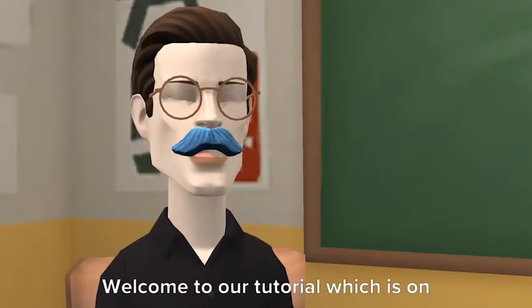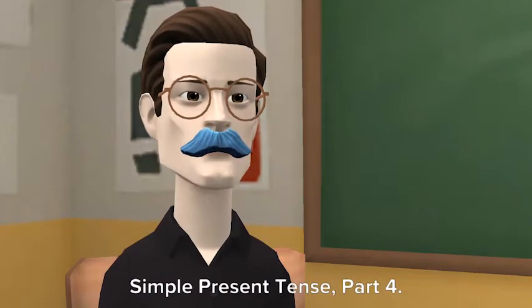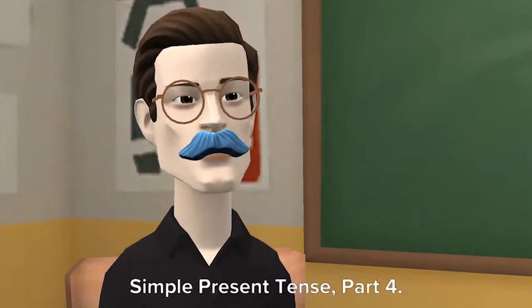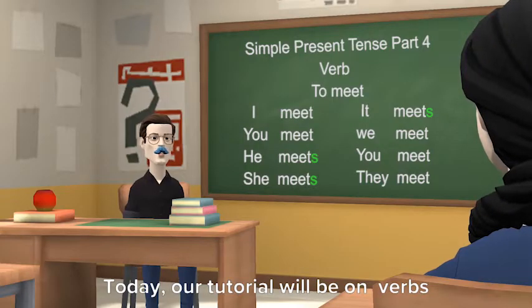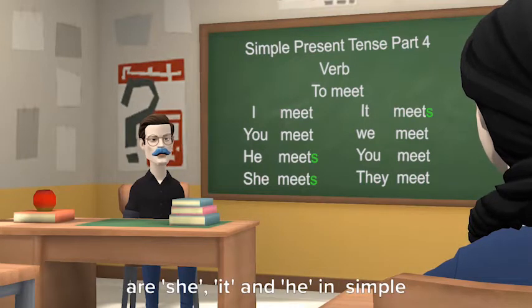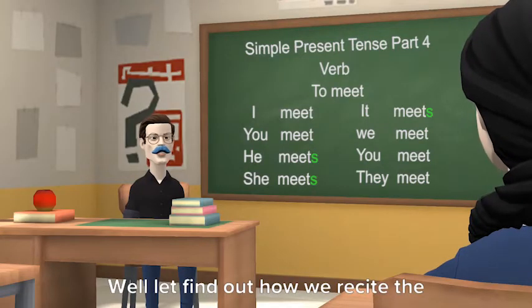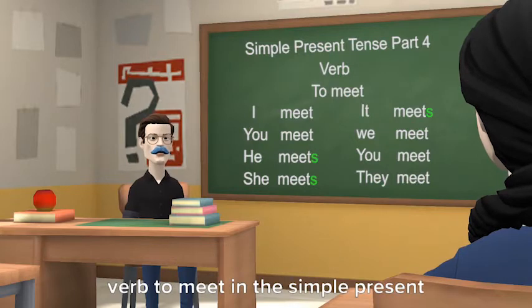Welcome to our tutorial on simple present tense, part 4. Today our tutorial will be on verbs where we have to add an S when pronouns are she, it, and he. In simple present tense, adding S with most verbs. To meet — let's find out how we recite the verb 'to meet' in the simple present tense.